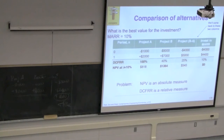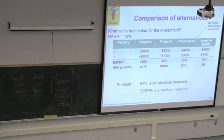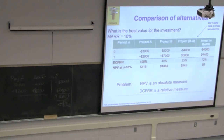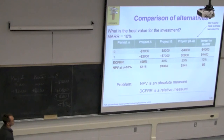One question: would there ever be a case where the incremental investment is below MARR but the full Project B DCFRR exceeds MARR? Another important point: do projects have to have the same lifetime? Yes — projects must have the same lifetime to assess this incremental analysis.